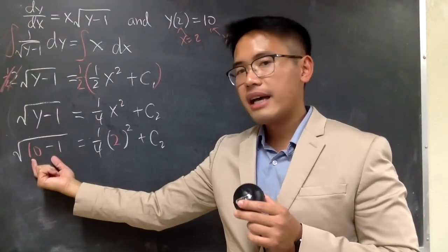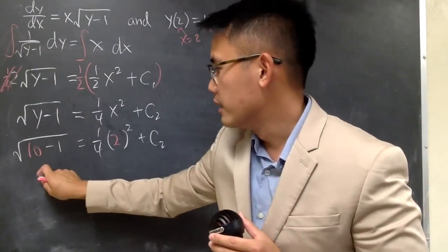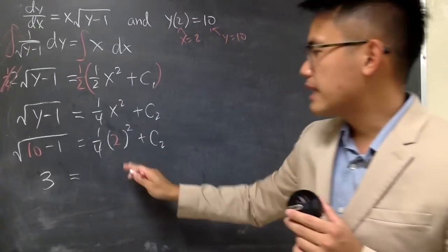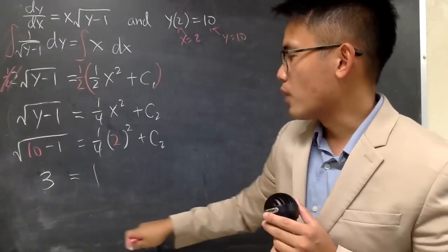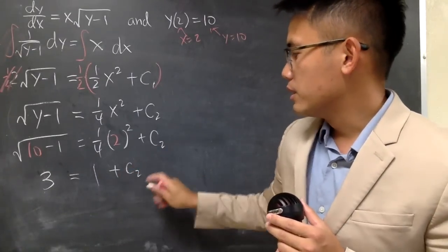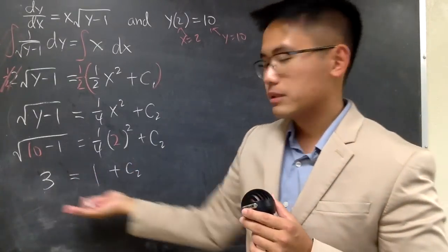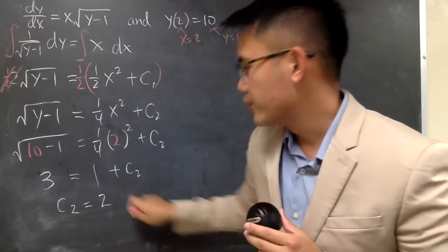On the left hand side, this is just 9 under the square root, so altogether you get 3. On the right hand side, this is 4 divided by 4 which is 1. So in another word, if you subtract 1 on both sides, c2 is equal to 2.